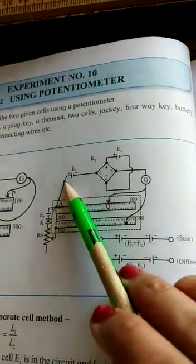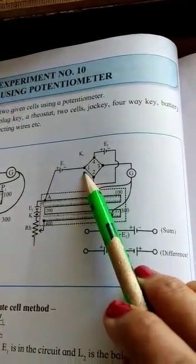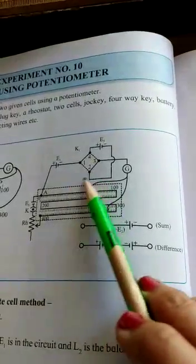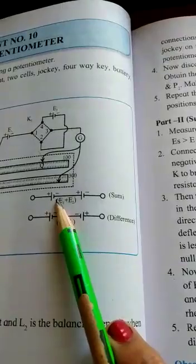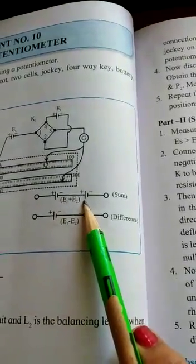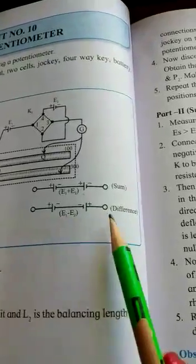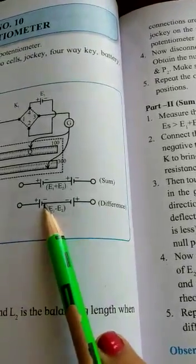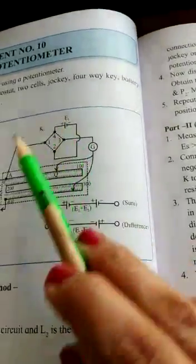From point A it goes to the positive of E1, negative of E1 goes to the key. Now we will have to connect like this for the sum. Negative of E1 should be connected to the positive of E2 and that circuit should come here. And for difference, the negative of E1 should be connected to the negative of E1. We can use a four-way key here.